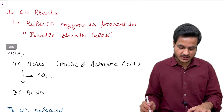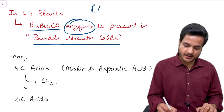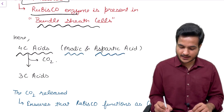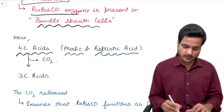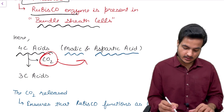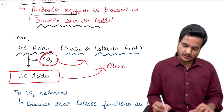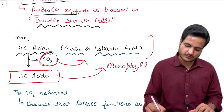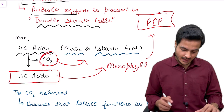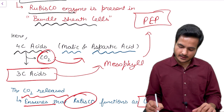At the RuBisCO enzyme site in C4 plants, carbon dioxide concentration is increased. RuBisCO in bundle sheath cells always behaves like a carboxylase. The 4-carbon containing acids — malic acid and aspartic acid — are sent to bundle sheath cells where they undergo decarboxylation, releasing CO2 which is stored in bundle sheath cells. This produces a 3-carbon acid that is sent back to mesophyll cells, leading to regeneration of phosphoenol pyruvate — all covered under the Hatch and Slack pathway.